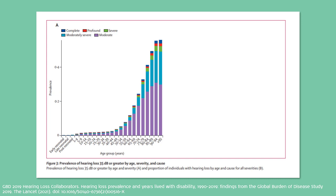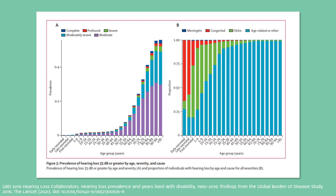What is particularly interesting when we consider the paediatric population is how different the causal factors behind hearing loss are. We can see a much greater proportion of congenital and otitis media-related causes. Otitis media is a very common cause of conductive hearing loss in the paediatric population, but there are in fact different types of otitis media.